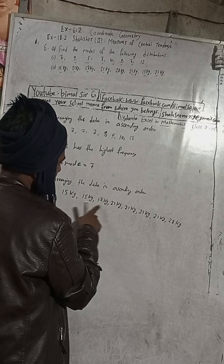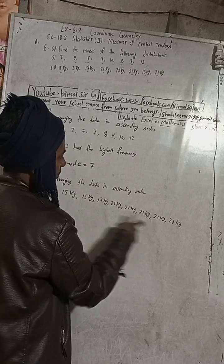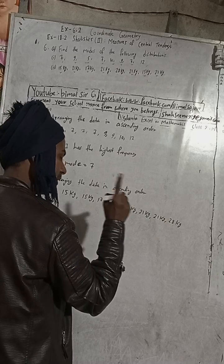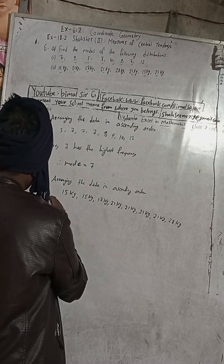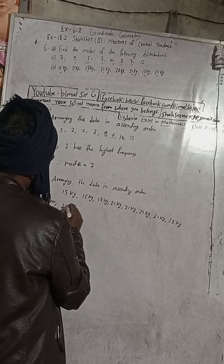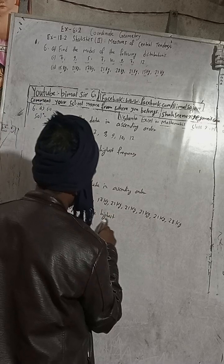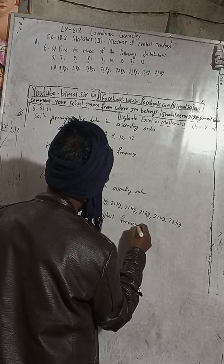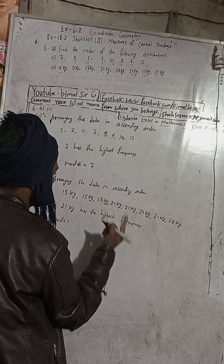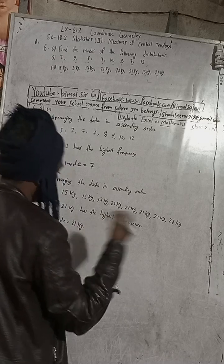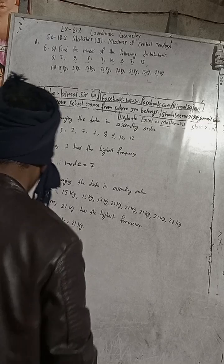Now: 15 kg appears 2 times, 17 kg appears 1 time, 21 kg appears 4 times, and 28 kg appears 1 time. The highest frequency is for 21 kg. Therefore, 21 kg has the highest frequency. The data with the highest frequency is called the mode, so the mode is 21 kg. For question one the mode was 7, and for question two the mode is 21 kg.